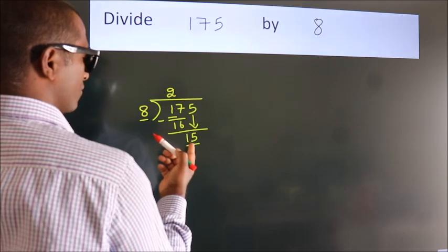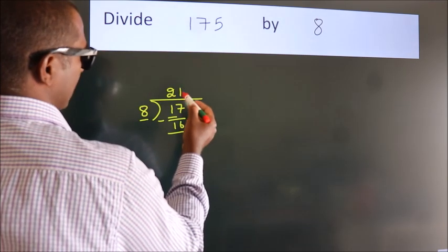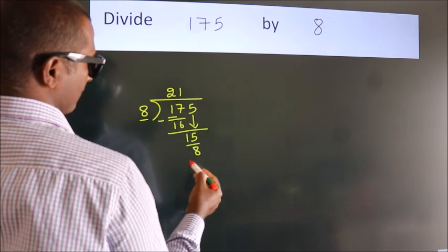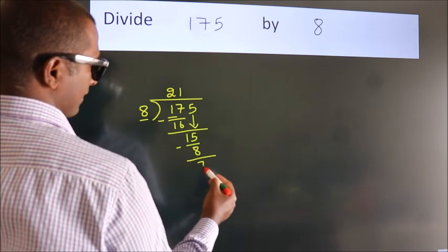A number close to 15 in the 8 table is 8 times 1 equals 8. Now we subtract. We get 7.